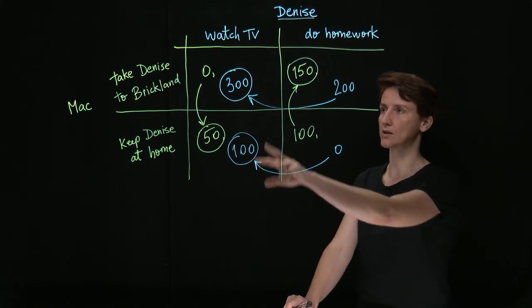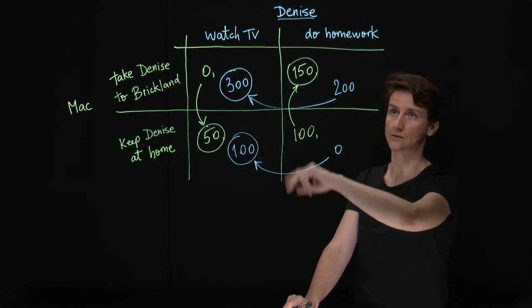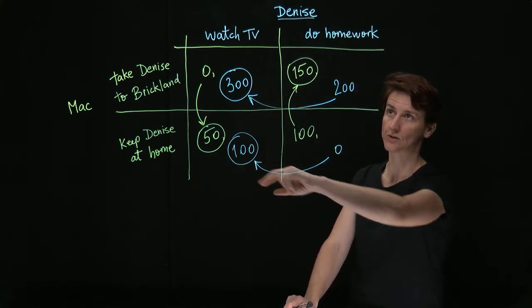So there's only one Nash equilibrium in the game, there's only one combination of strategies where both Mac and Denise are best responding, and that's when he keeps her at home and she watches TV.